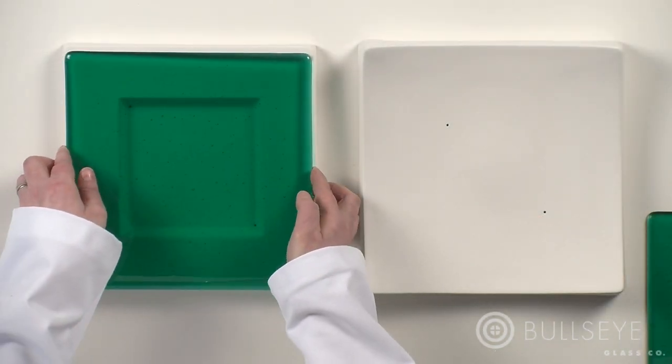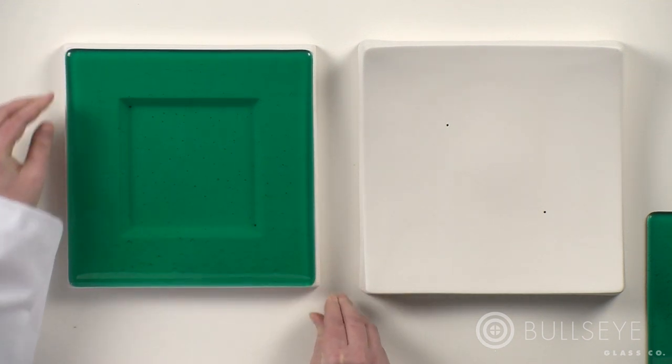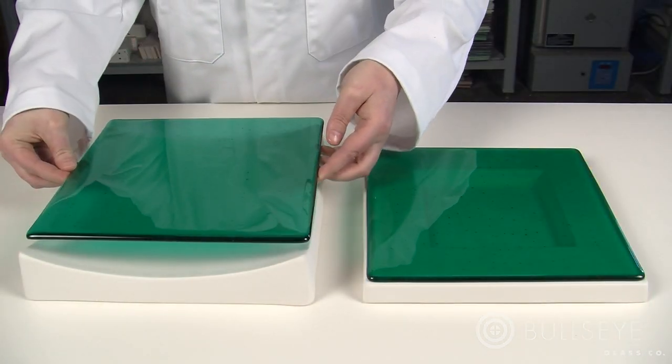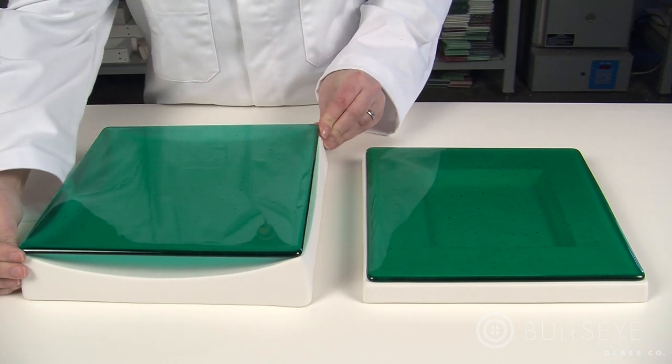These molds are both approximately 10 inches square, but the curvatures and unsupported masses of glass are quite different. The square slumper, which supports the glass only by the corners, will slump with much less heat work.